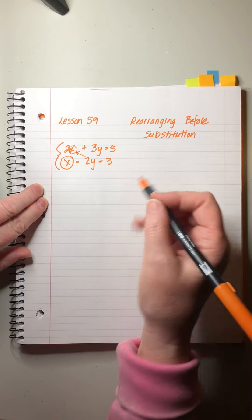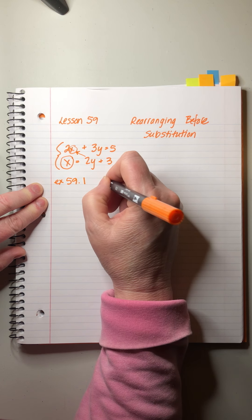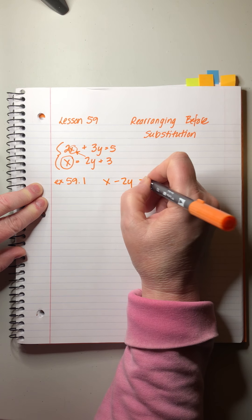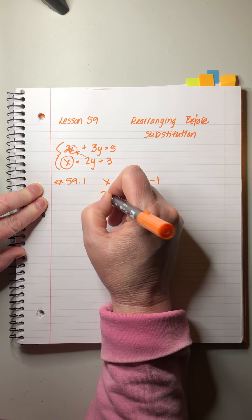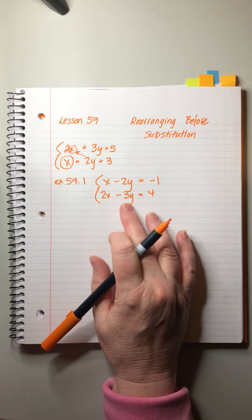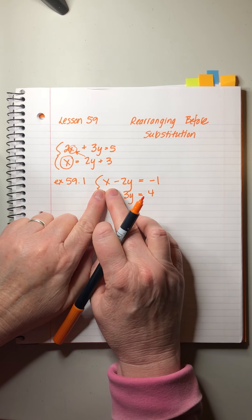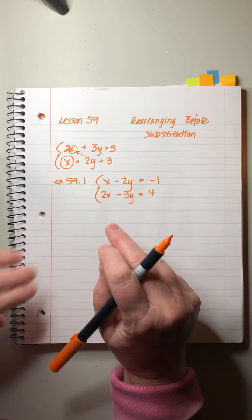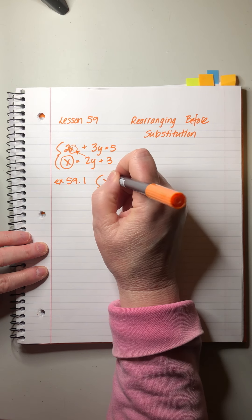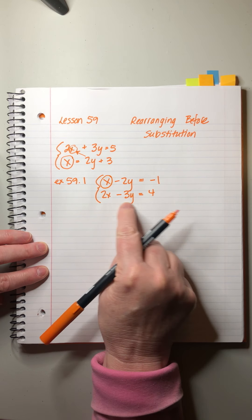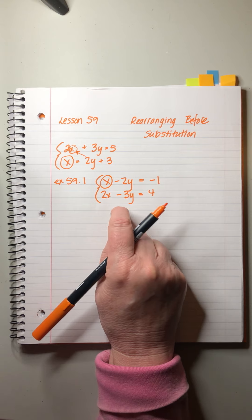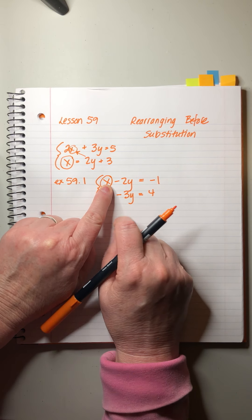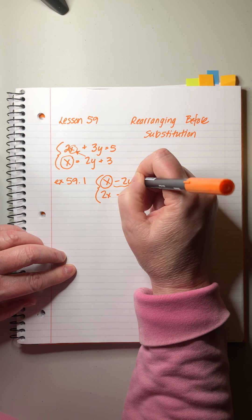There are three examples in this lesson. Here's the first one. This one looks a little different. The second equation looks normal — x, y, plain number — but the first one is not set up perfectly. What we do is look for the term that has a letter but no number. That's the one we want as our substitution variable. The others have coefficients like minus two, positive two, or minus three, so they're not good candidates.